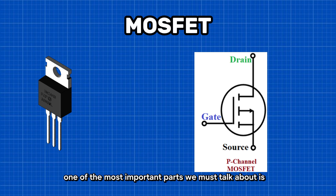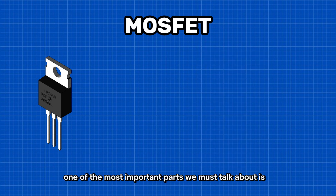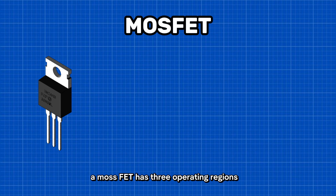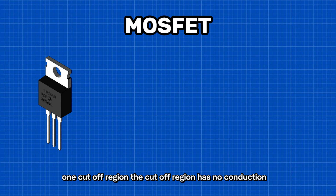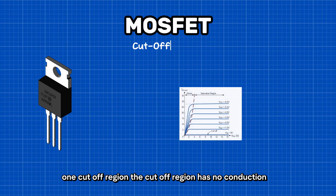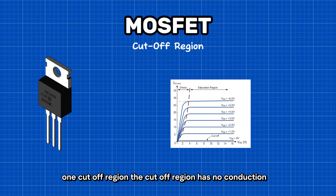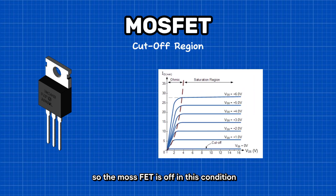One of the most important parts we must talk about is the operating regions of MOSFET. A MOSFET has three operating regions. One: cutoff region. The cutoff region has no conduction, so the MOSFET is off. In this condition, the MOSFET behaves like an open switch.